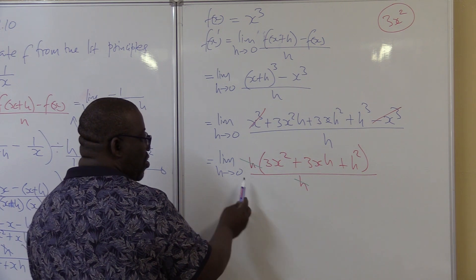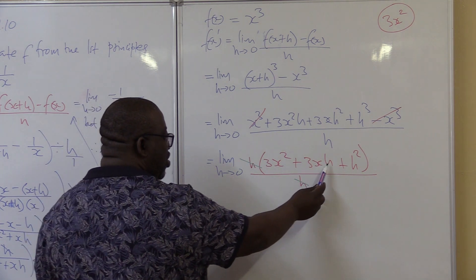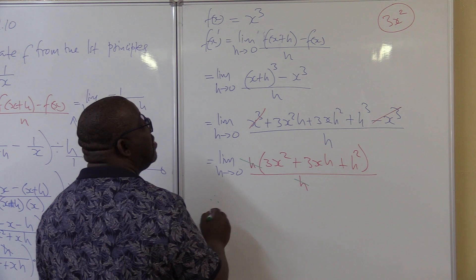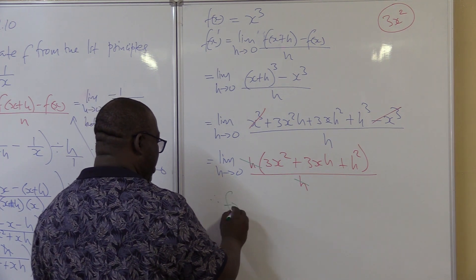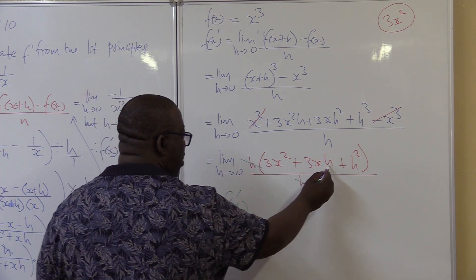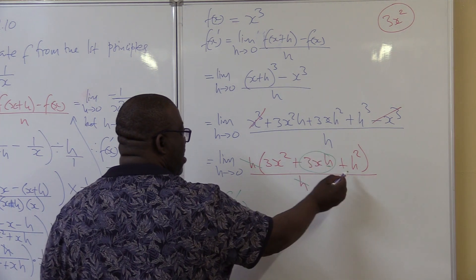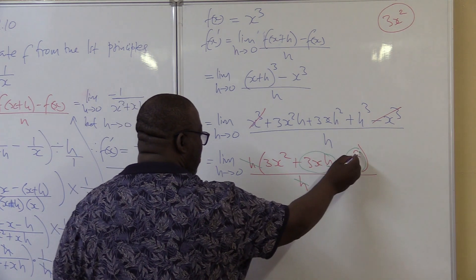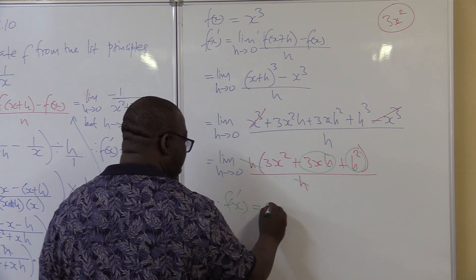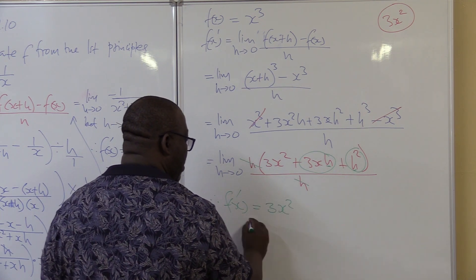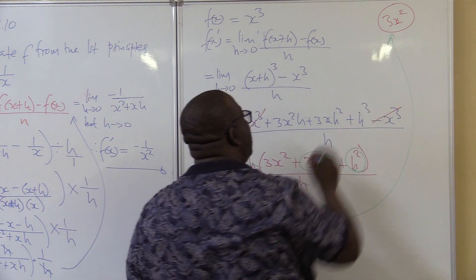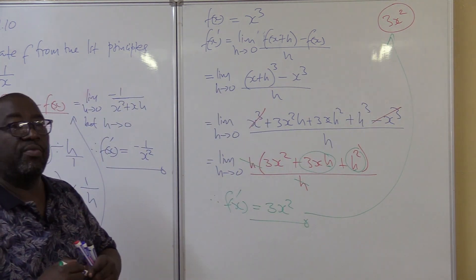As h approaches 0, we push in 0. Pushing 0 into 3xh gives 0, and pushing 0 into h squared gives 0. We're left with 3x squared. This is the final answer, exactly as predicted.